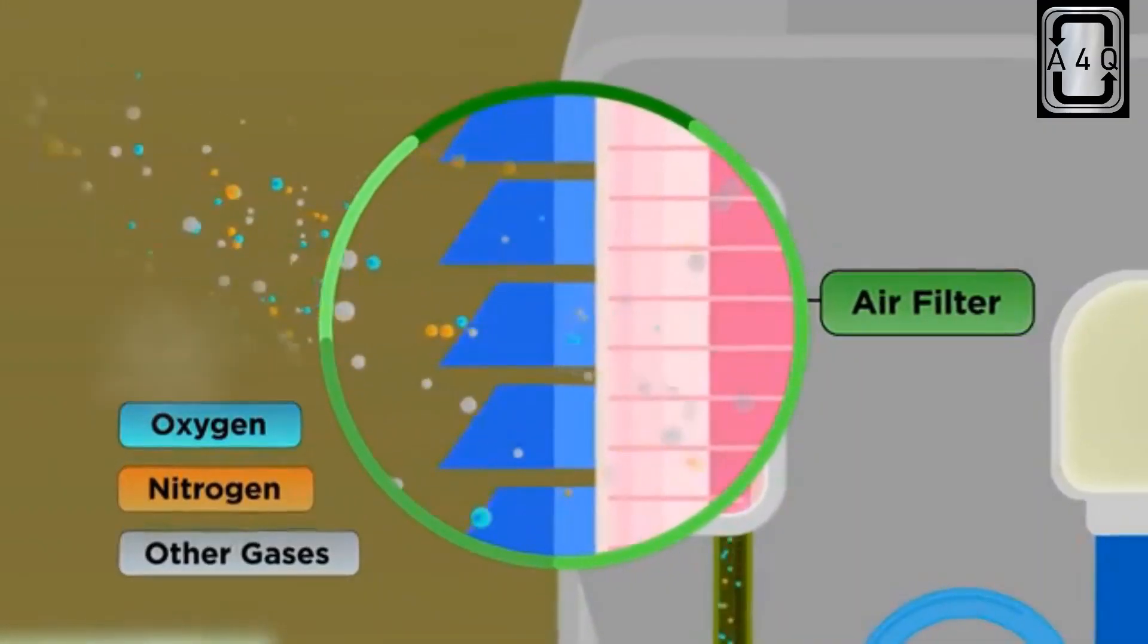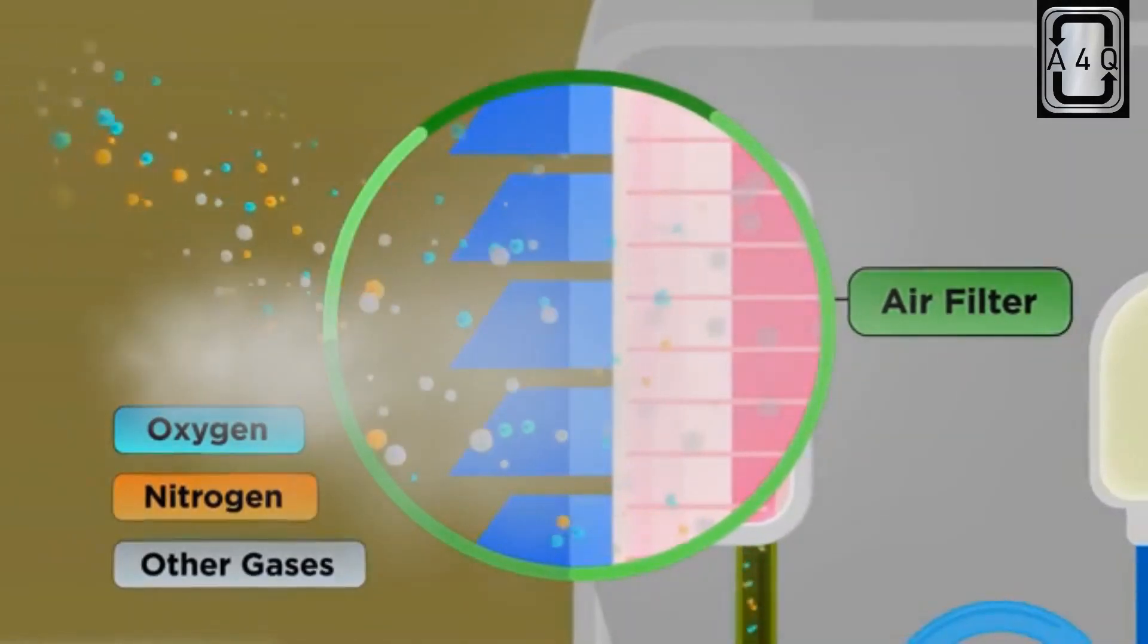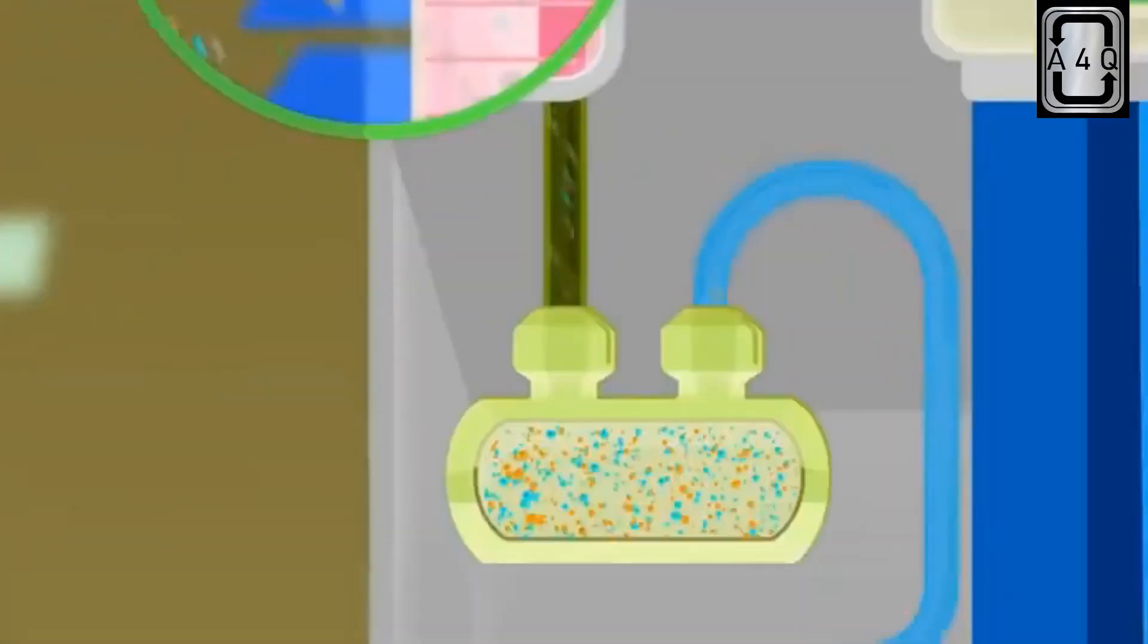The oxygen concentrator equipment working process starts by taking the air around us and filtering it to remove dust, smoke, or other impurities.